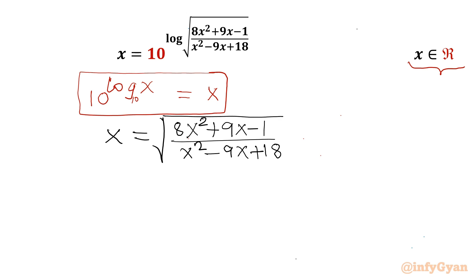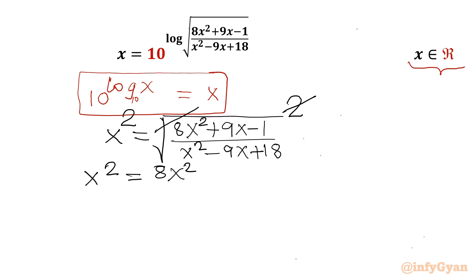Now I will square both sides — writing power 2 on each side. The square root and the power 2 cancel, leaving x² equals (8x² + 9x − 1) over (x² − 9x + 18).